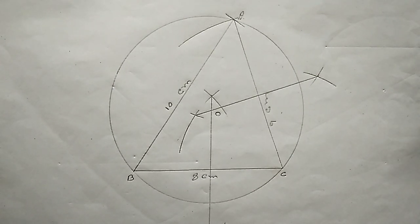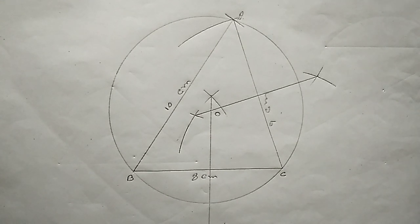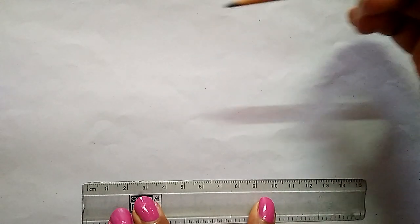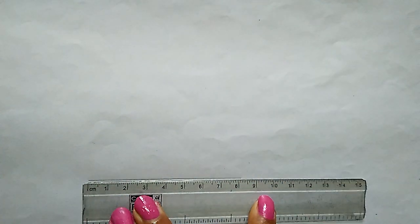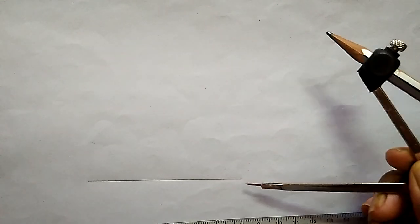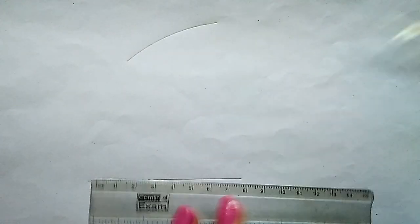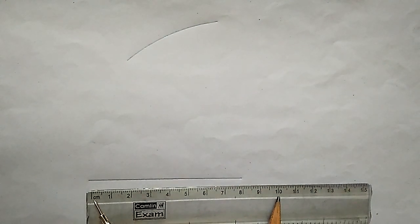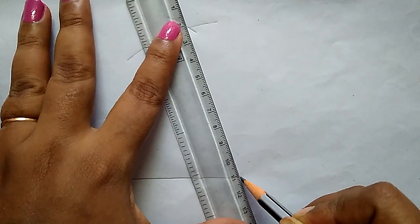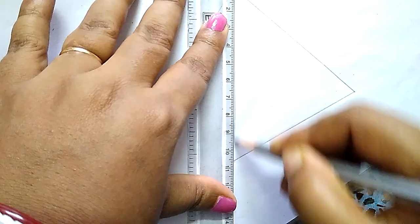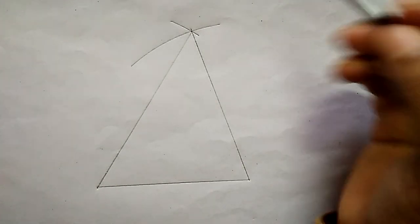Hello, today I am going to show you how to construct a circumcircle of a triangle. Here is a triangle with sides that are 8 centimeters, 9 centimeters, and 10 centimeters long.